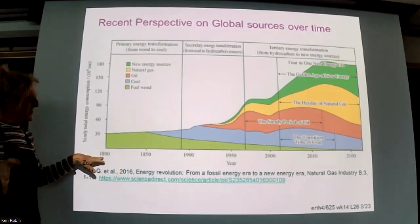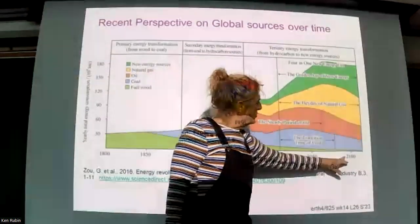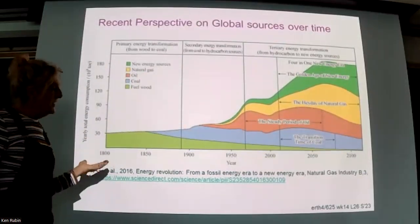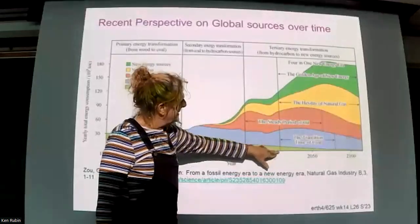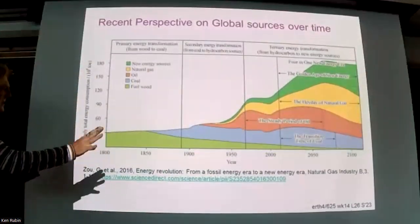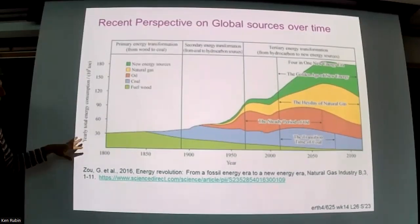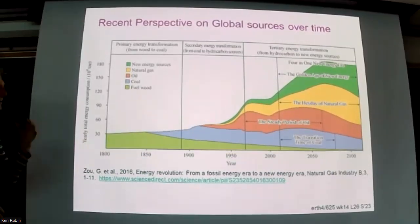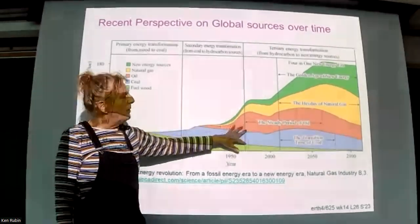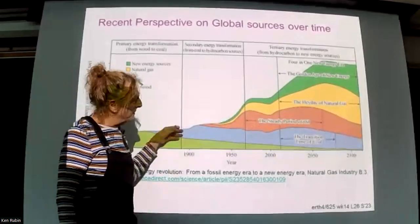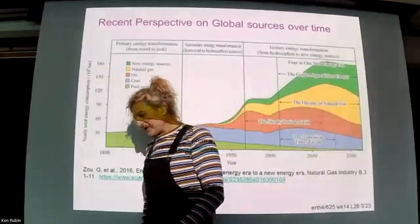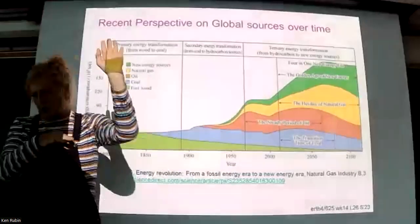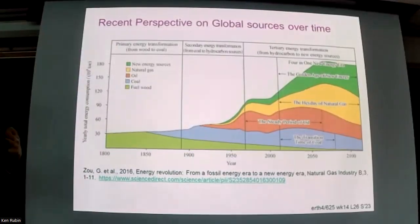This chart starts in the 1800s at the industrial revolution and goes through projections to around 2120. You can see early on there was a lot of wood, which burns dirty but is fairly renewable. We then transitioned to heavy coal use. In this projection from this paper, coal continues well past the year 2100 — whereas earlier projections from the 80s expected we'd be off coal by now due to global warming and its dirty nature.